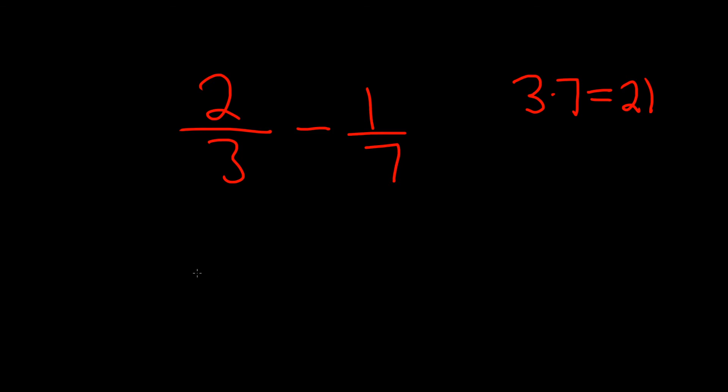And so now what we do is we multiply each of these fractions so that the bottom becomes 21. In the first case we're missing a 7 because we already have a 3, so what you do is you do 7 over 7 times 2 over 3. We're basically multiplying by 1, and then minus, and then here you're missing a 3, so it'll be 3 over 3 times 1 over 7. So basically you multiply by what's missing so that the bottom is 21.